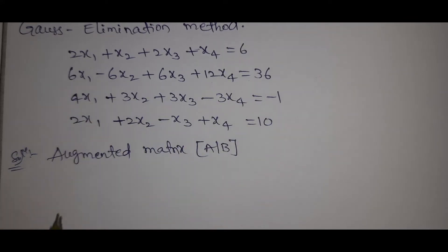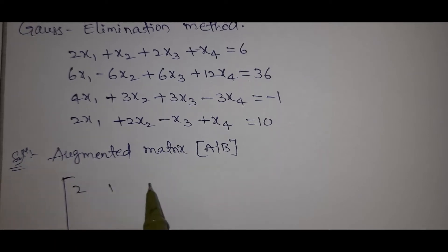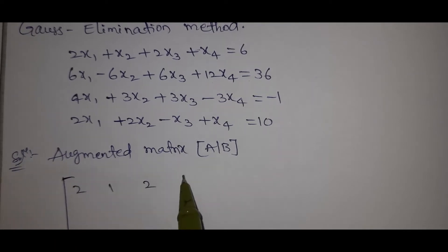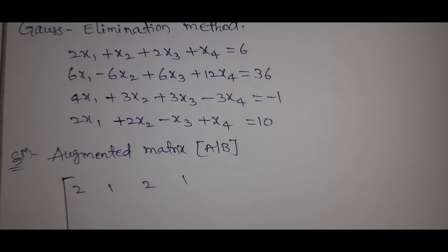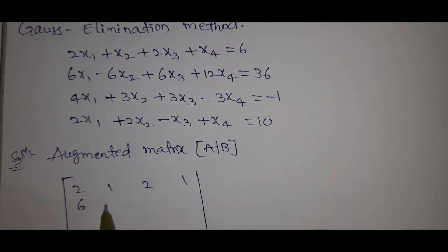This is the matrix A. The first row is: 2, 1, 2, 1 — with RHS equal to 6.